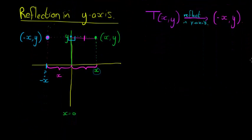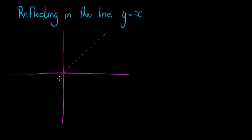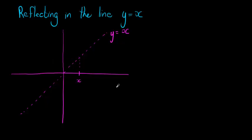We're going to look at one more reflection for the scope of this course: reflecting in the line y = x. We actually encountered this already when we did inverses in functions and graphs. The line y = x consists of all coordinates where the y value equals the x value — in other words, every point where if you read off an x value, you read off the same value for y.